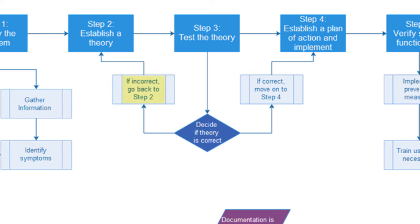If it's incorrect, if your theory tests negative, then you go back to step 2 and establish a new theory. If the theory tests positive and it's correct, then you move on to step 4.